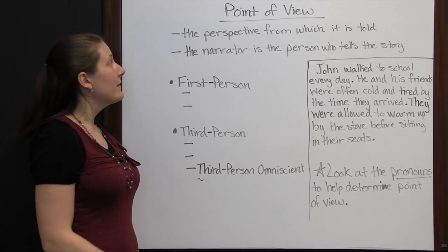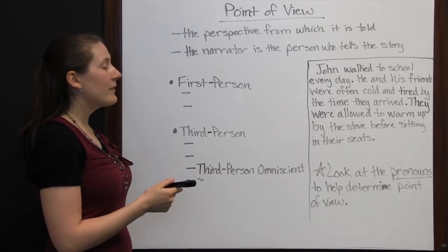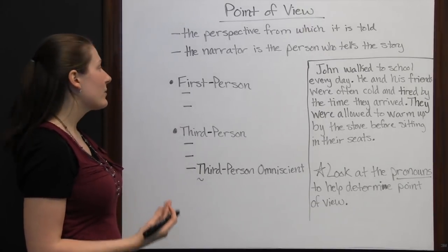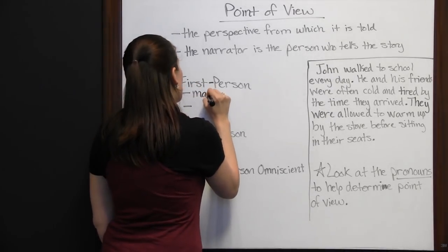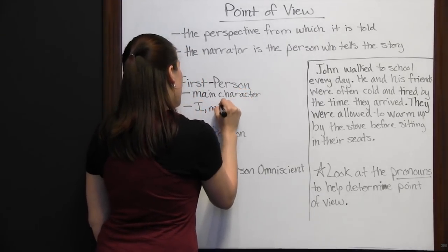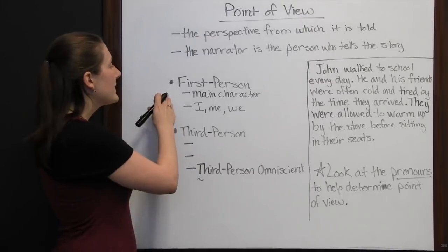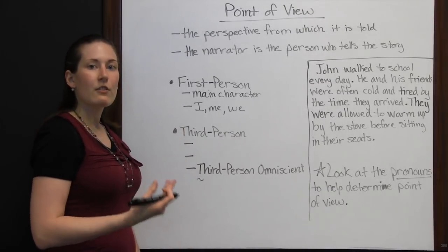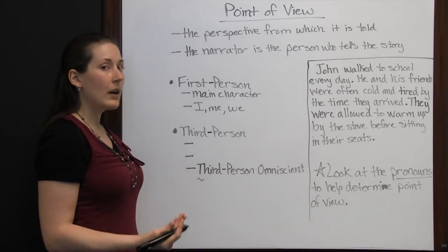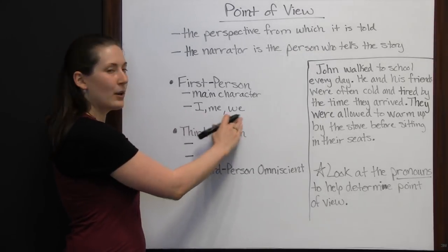The point of view is the perspective from which a story is told, and the narrator is the person who tells the story. When looking for point of view, we look to see if we have a first-person narrator or a third-person narrator. In first person, your narrator is going to be your main character, and they're going to use pronouns like 'I,' 'me,' and 'we.' If it's the main character, you're only going to know what the main character knows — you'll only read about what that main character does, and you won't know about anything that doesn't happen involving the main character.